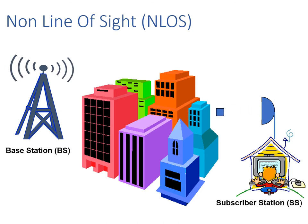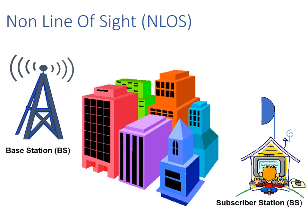So anything which interferes with the signal path, such as buildings, natural objects, aircraft, people, cars, etc., are going to actually help in the overall efficiency and effectiveness in MIMO applications. So let's take a look at exactly how this MIMO technology works.